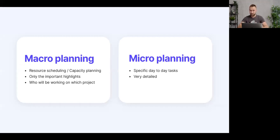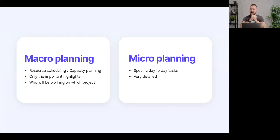Before anything else, let's discuss the difference between macro and micro planning, because today we'll talk about macro planning. Macro planning is long-term — a week, a month, perhaps a quarter — and you're focused only on the important highlights, not day-to-day details. With micro planning, you're more concerned with minor details, like what your next task is.